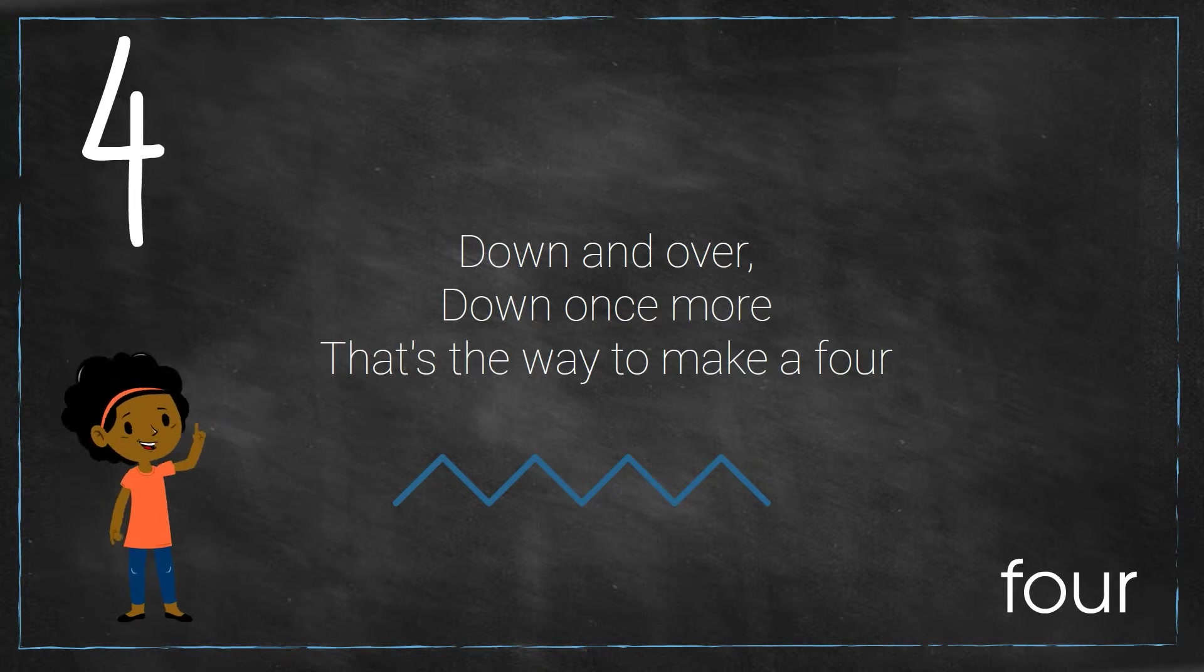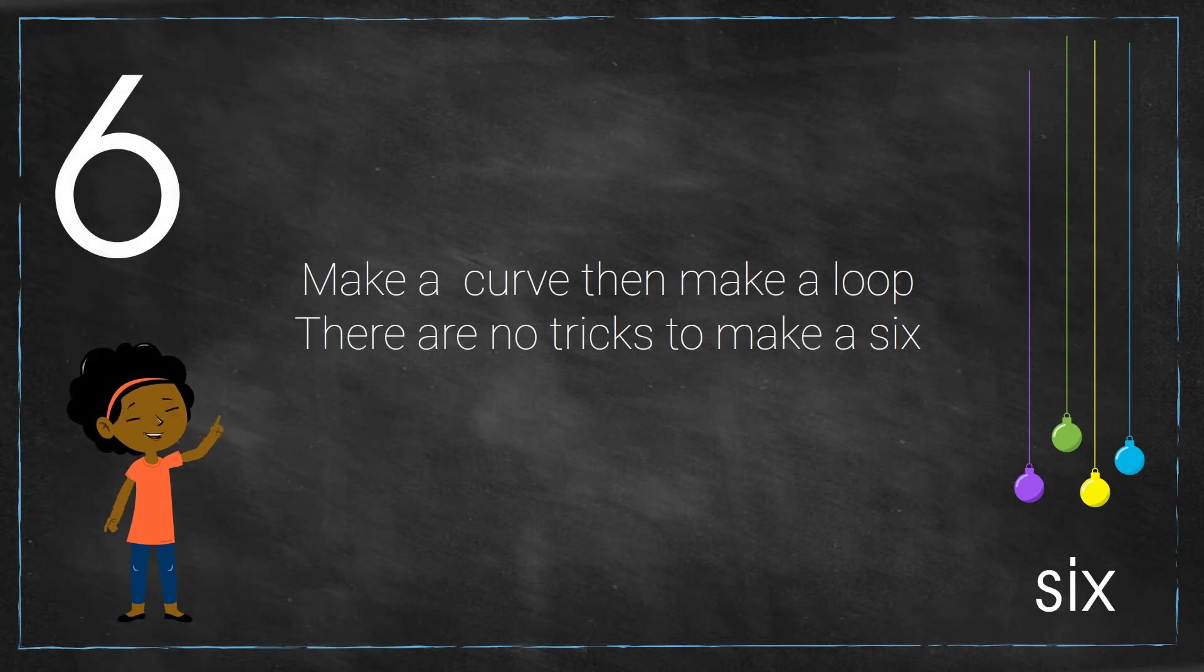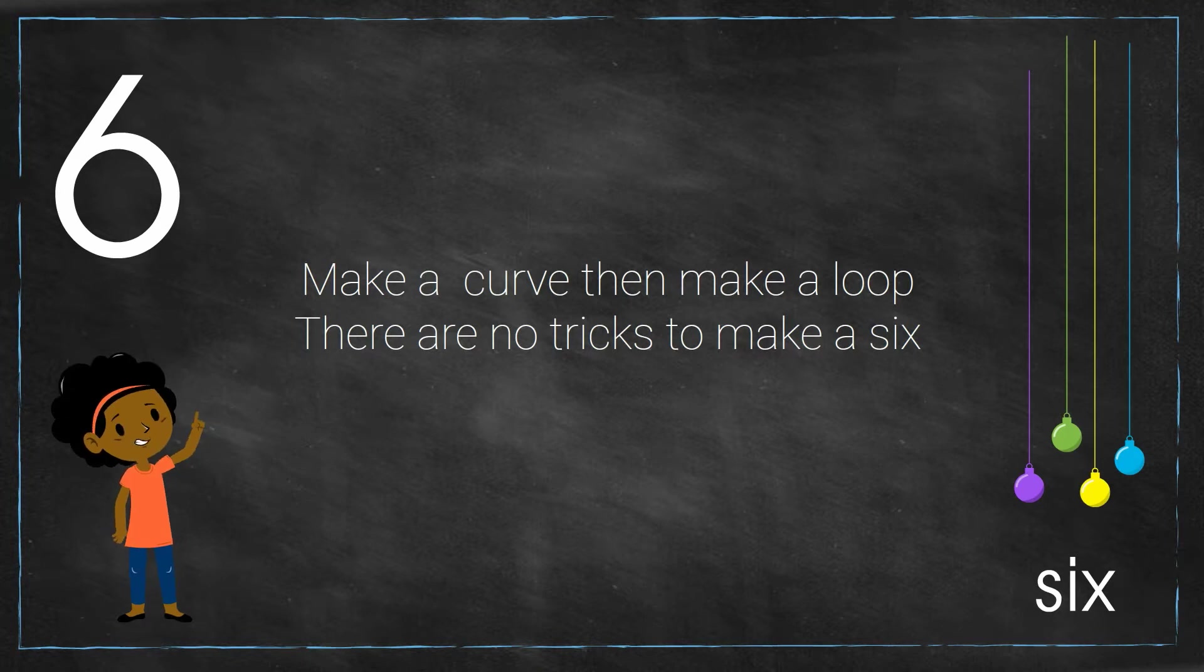Five. How do we write the number five? Straight line down then around, hat on top, five's a clown.